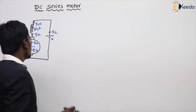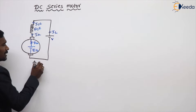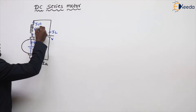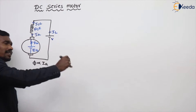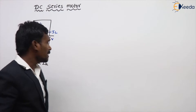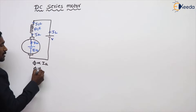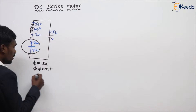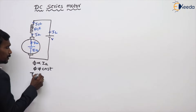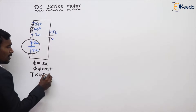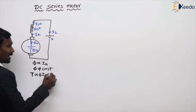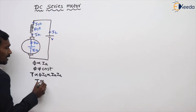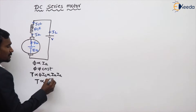The flux is directly proportional to IA. If IA increases, ISE increases, and when ISE increases, flux increases — so flux is not constant. Therefore, torque is directly proportional to φ × IA. But since φ is proportional to IA, we have torque directly proportional to IA².